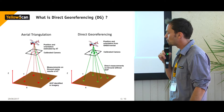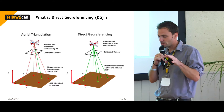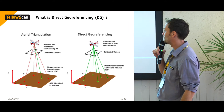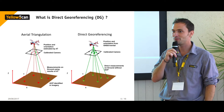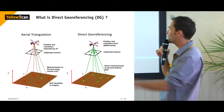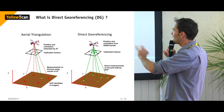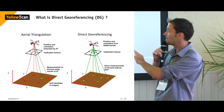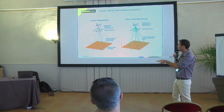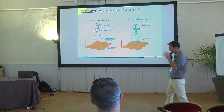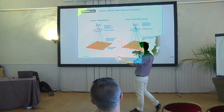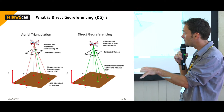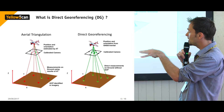To explain the direct georeferencing term, here are two diagrams extracted from an Applanix document that display aerial triangulation versus direct georeferencing. With aerial triangulation, it's an upward workflow where you're identifying ground control points on the images.